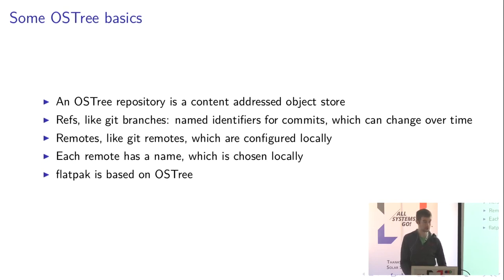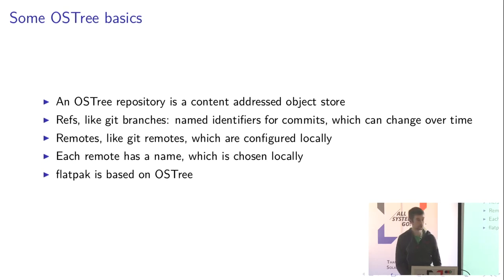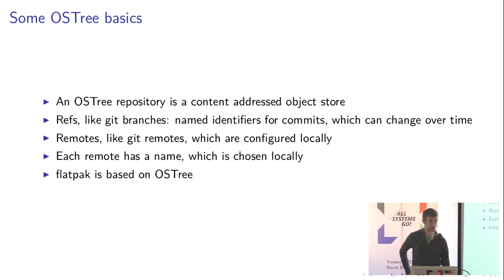It has refs, which are basically human-readable names pointing to a commit, just like a Git branch, and they can change over time — from an old commit to a new commit. It has remotes, just like Git remotes: a little configuration saying here is some repository on the Internet somewhere which you can download updated refs from. Each remote has a name which you choose locally; by convention it is always the same, but it does not have to be.